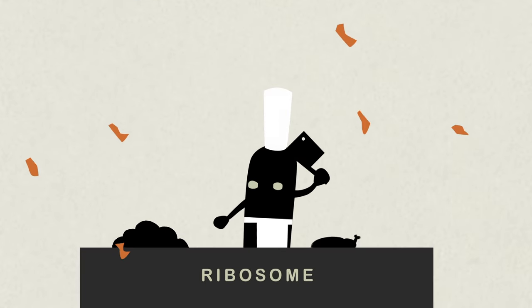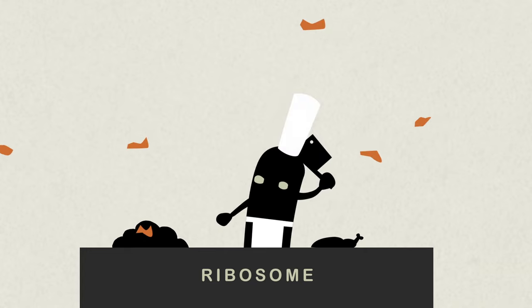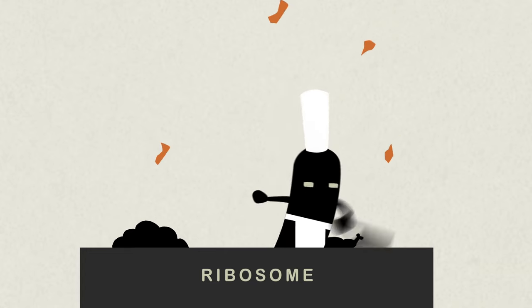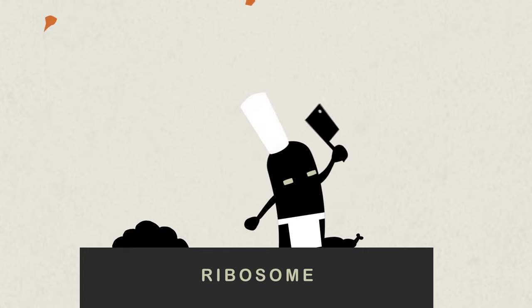The cell then realizes there are odd, strangely sized pieces of RNA floating around, and destroys them, preventing the mRNA from being turned into protein.